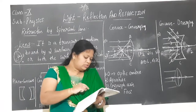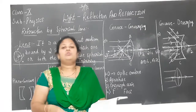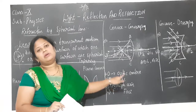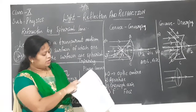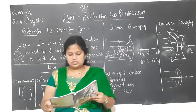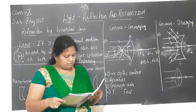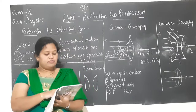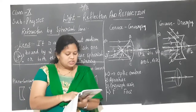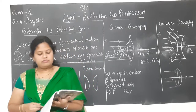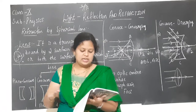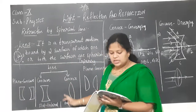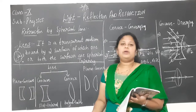Refraction by spherical lenses — please go through figure 10.12. The definition of a lens from page 86: a transparent material bound by two surfaces, of which one or both surfaces are spherical, forms a lens. This means a lens is bound by at least one spherical surface; the other surface could be plane.